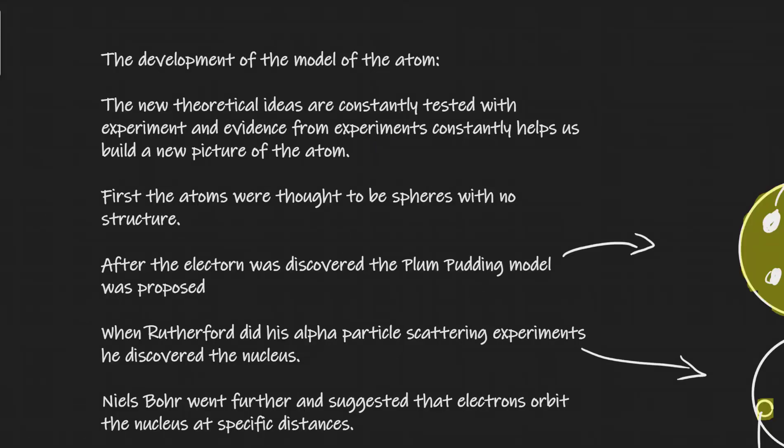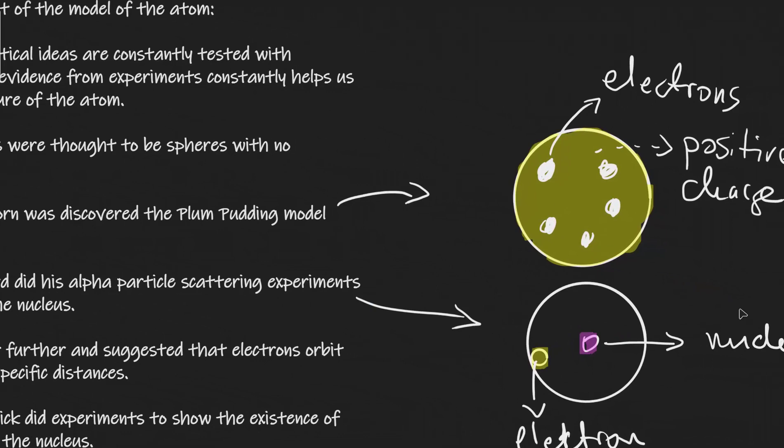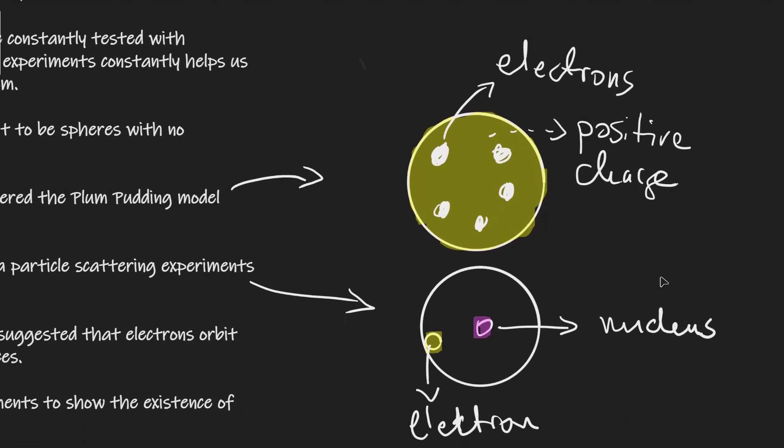So our ideas of what the atom actually consists of have evolved dramatically over time. For instance, people were initially thinking that the atoms were just indivisible spheres. However, new theoretical ideas have been constantly tested with experiments and evidence from experiments helps us build new pictures.